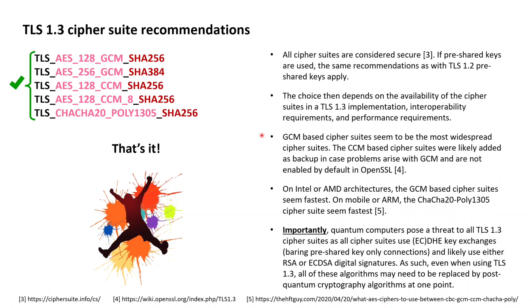Looking at performance, analysis of the cipher suites indicates that the GCM-based cipher suites are the fastest on Intel and AMD architectures. For mobile or ARM architectures, performance analysis indicates that the ChaCha20-Poly1305 cipher suite is fastest.